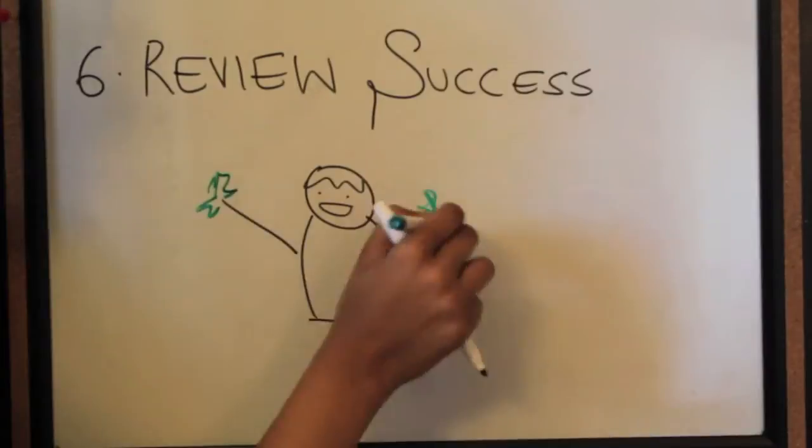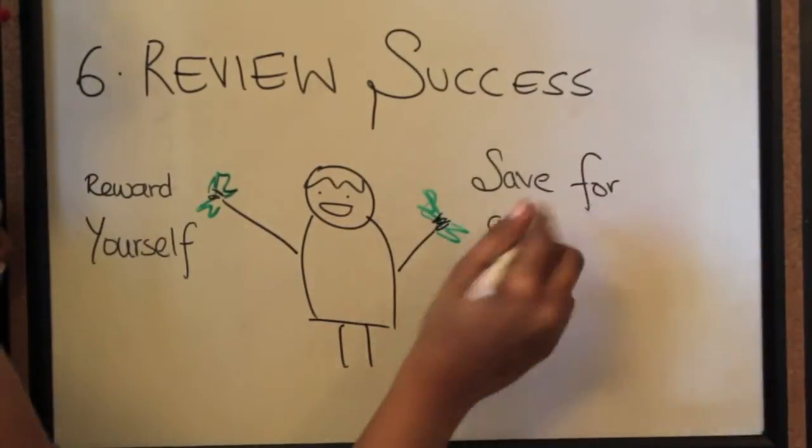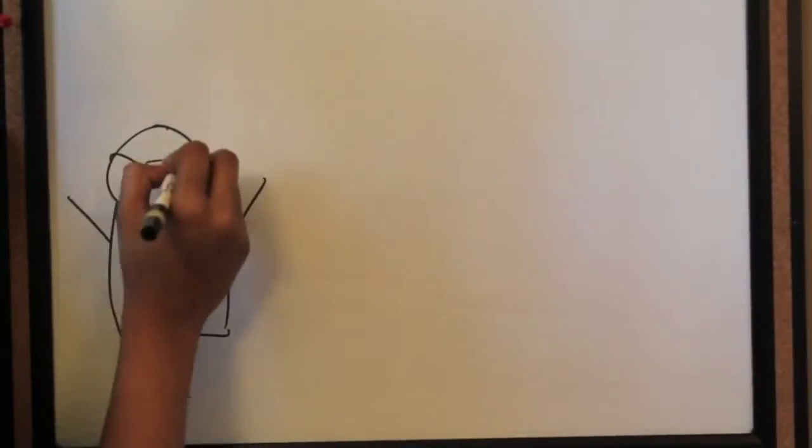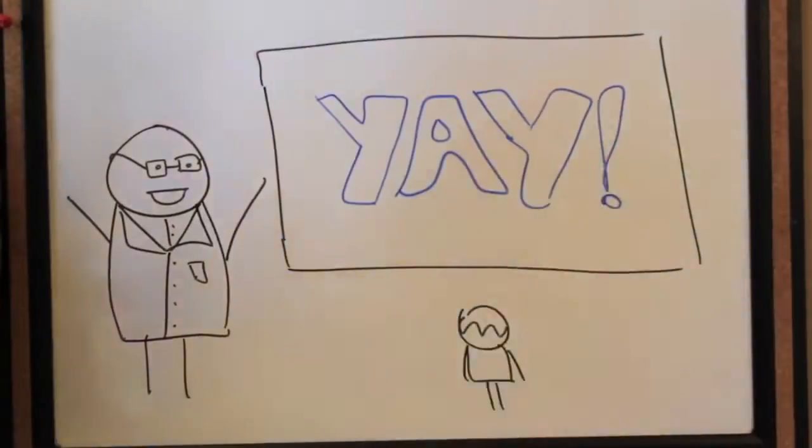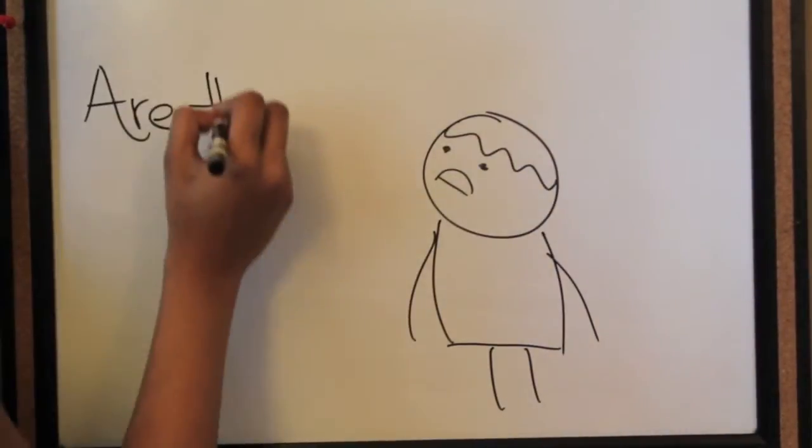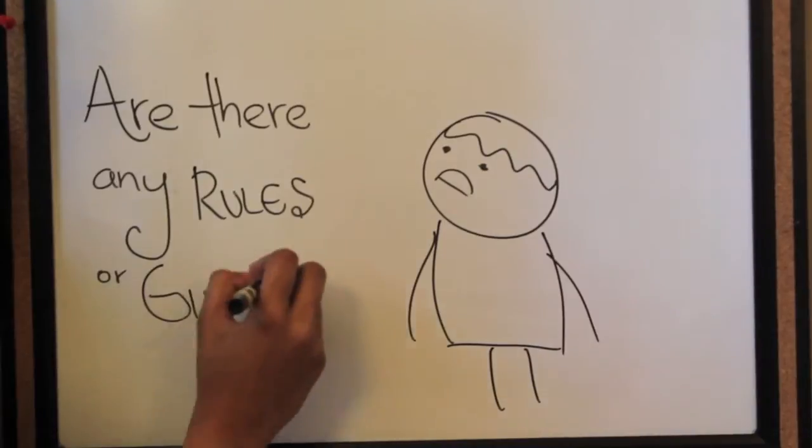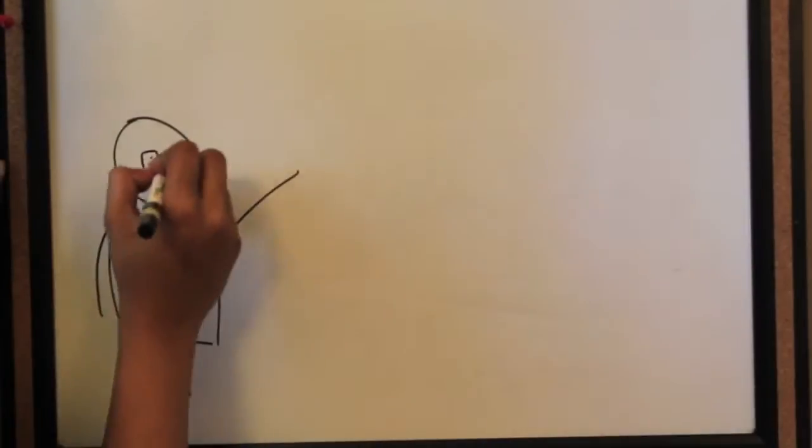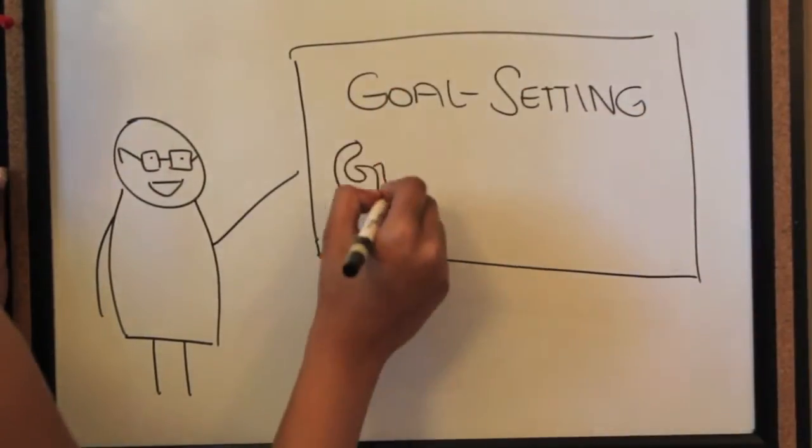Okay, so step six is review your success. Reward yourself, or save it for a rainy day. Wait for it. But are there any rules, or maybe even guidelines? Well yes, there are, but these are only for goal setting.